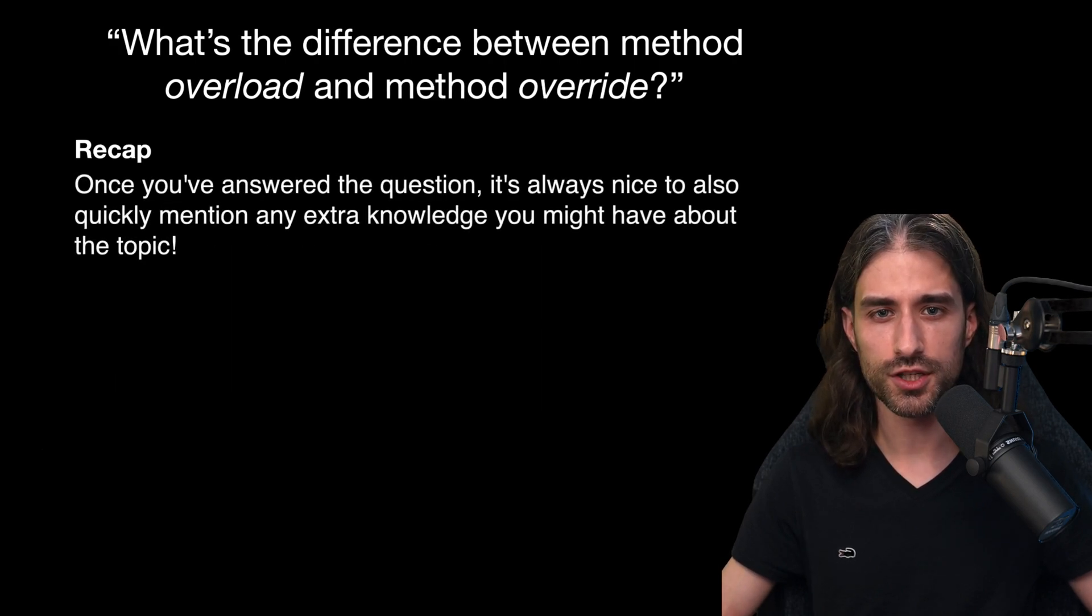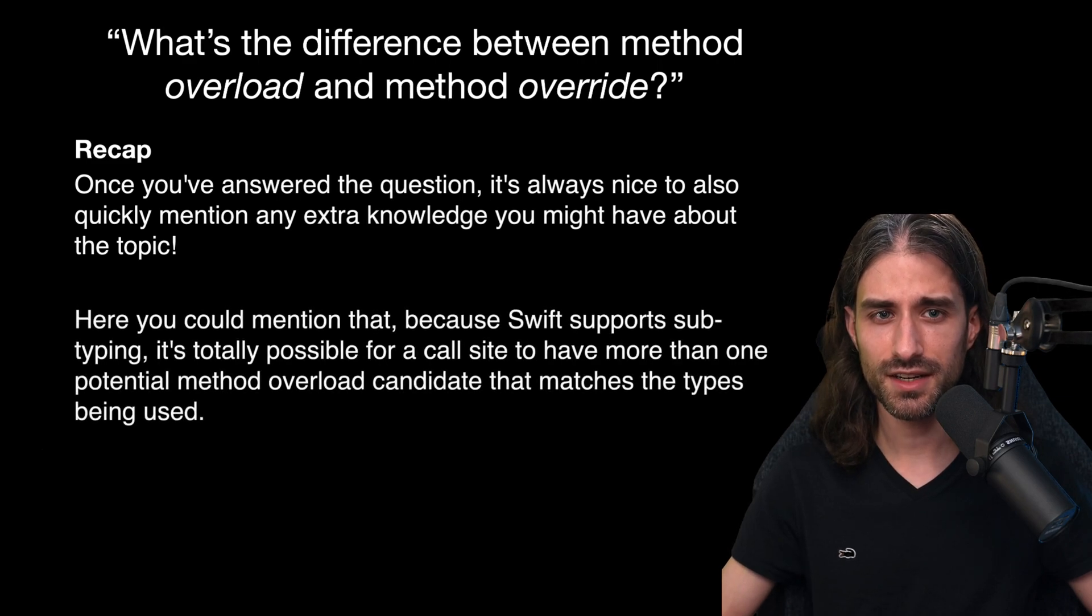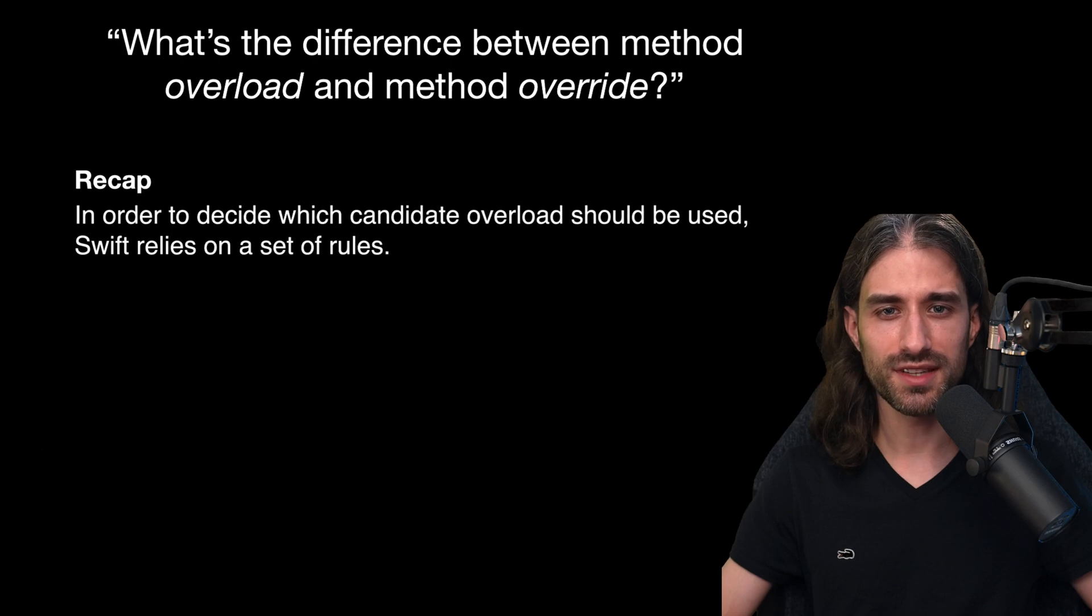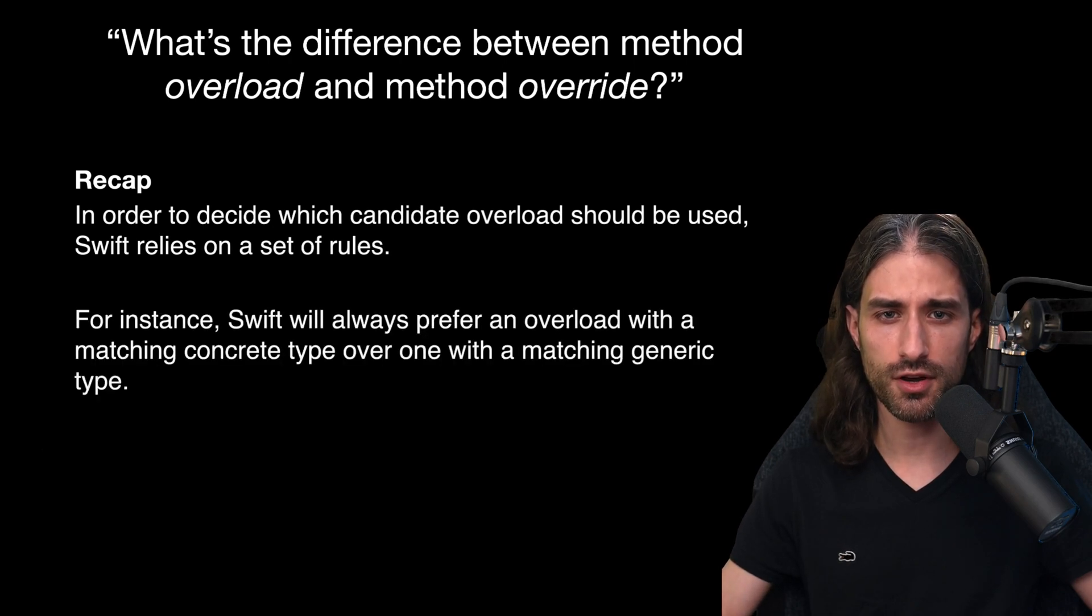Once you're done answering the question, it's always nice to quickly mention any extra knowledge you might have about the topic. For instance, here you could mention that because Swift supports subtyping, it's totally possible for a call site to have more than one potential method overload candidate that matches the types being used. So in order to decide which candidate overload should be used, Swift relies on a set of rules. For instance, Swift will always prefer an overload candidate with a concrete type over one with a generic type.